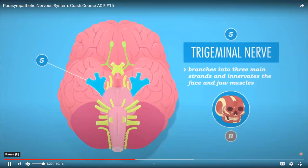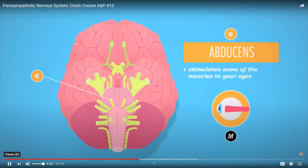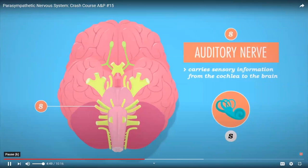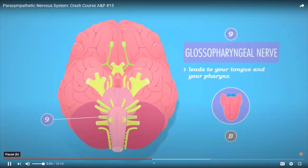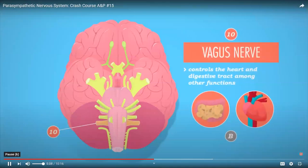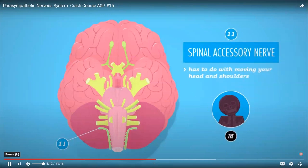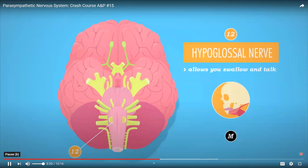Continuing: the facial nerve (VII) operates the muscles for most facial expressions; the auditory nerve (VIII) handles hearing. Working downward, the glossopharyngeal nerve (IX) leads to the tongue and pharynx; the vagus nerve (X) — definitely remember that one; the spinal accessory nerve (XI) has to do with moving your head and shoulders; and finally the hypoglossal nerve (XII) allows you to swallow and talk. A common mnemonic for remembering the order is: 'On Old Olympus' Towering Top, A Finn And German Viewed Some Hops.'